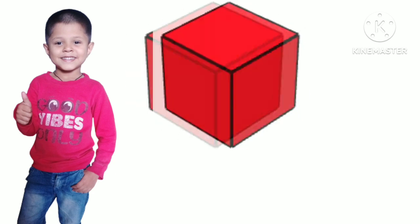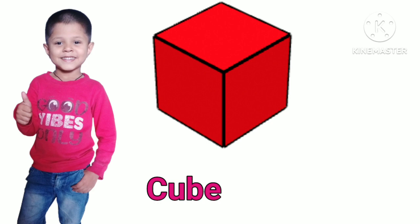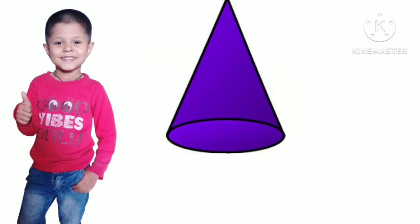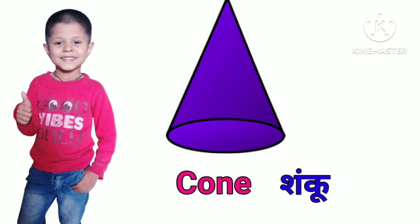Cube. C-U-B-E. Cube means Gana. Cone. C-O-N-E. Cone means Shanku.